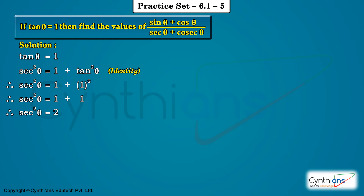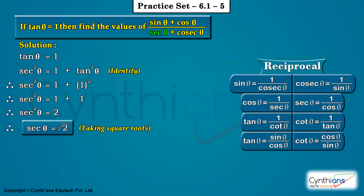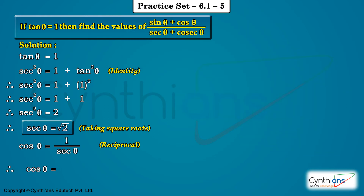Taking square roots on both sides, sec theta is equal to root 2. We box sec theta equal to root 2. This was the identity step. Now the next step is reciprocal — we know the reciprocal of sec theta is cos theta. So cos theta is equal to 1 upon sec theta, that is 1 upon root 2. Box it.